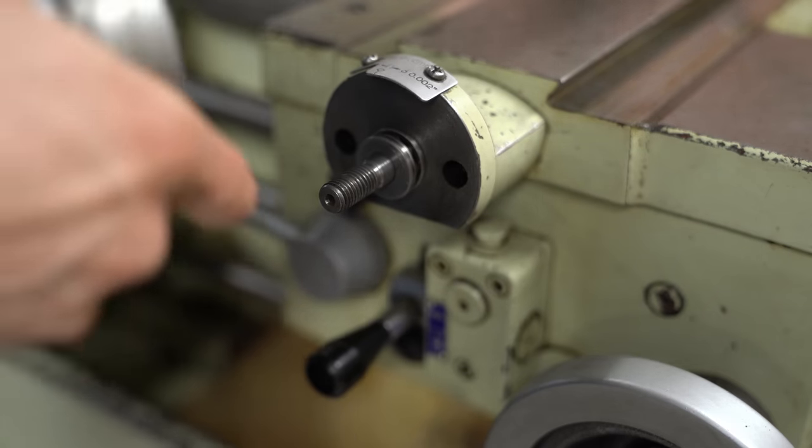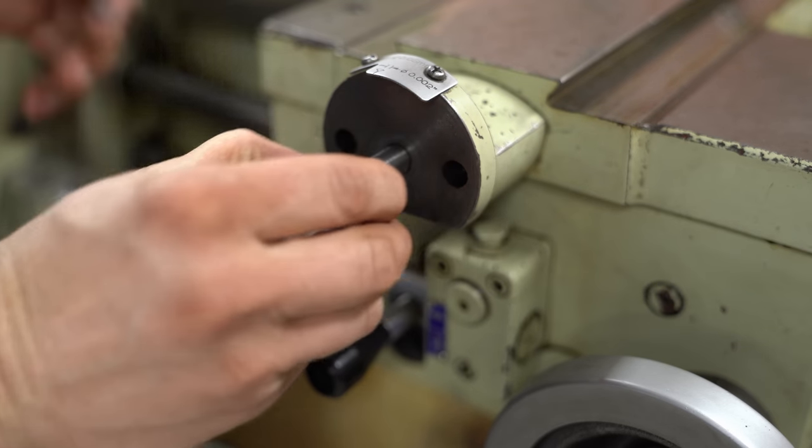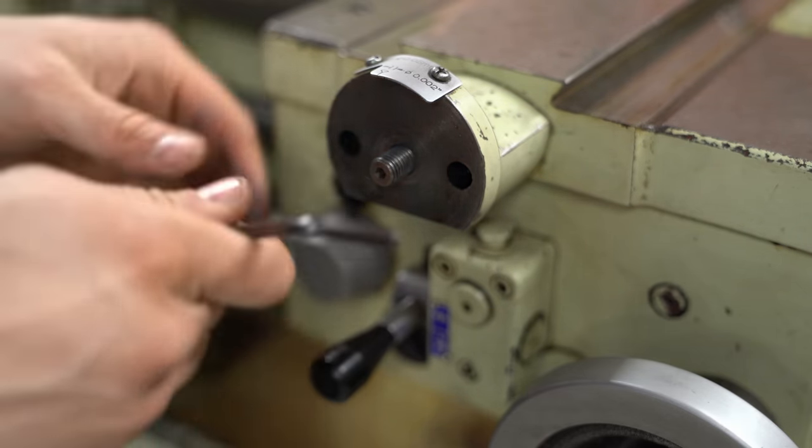There's a pair of thrust bearings in each axis, and they're pretty filthy, and actually one of the balls is missing, so I think I'll grab four new ones for reassembly.